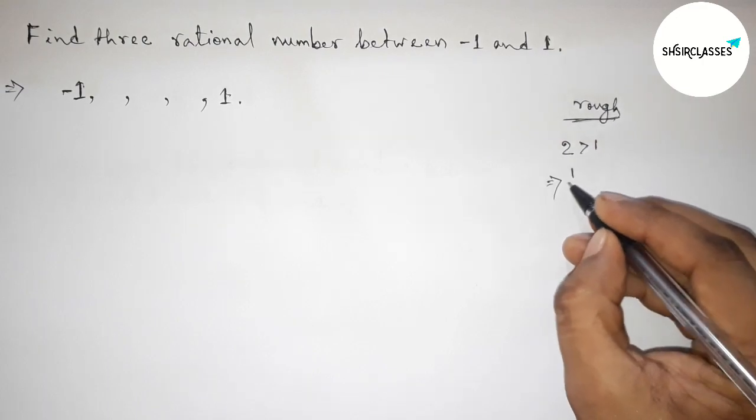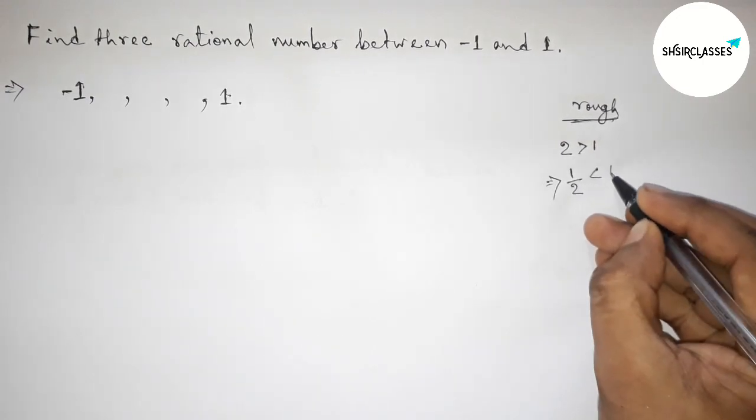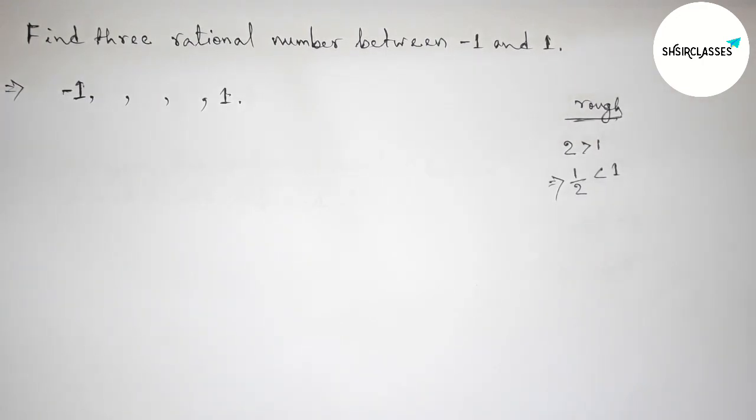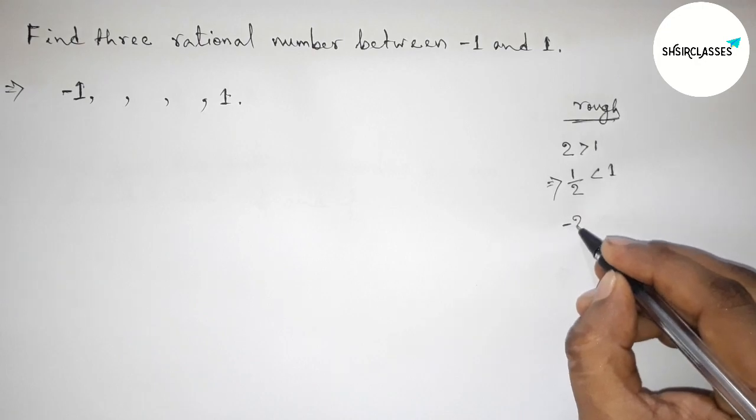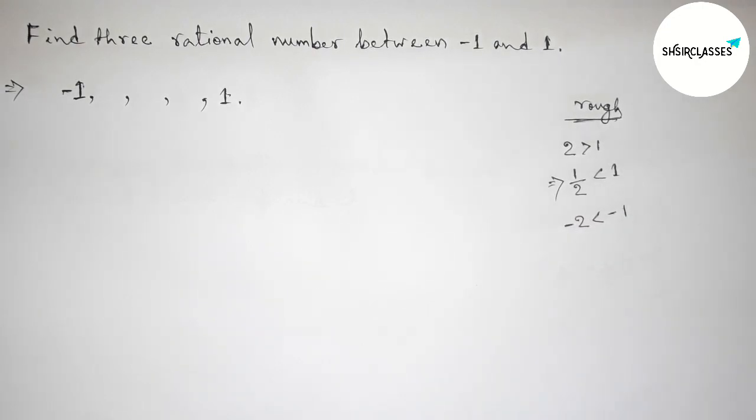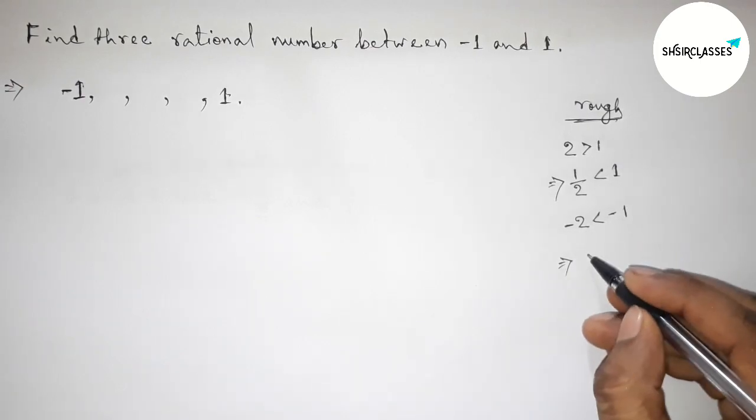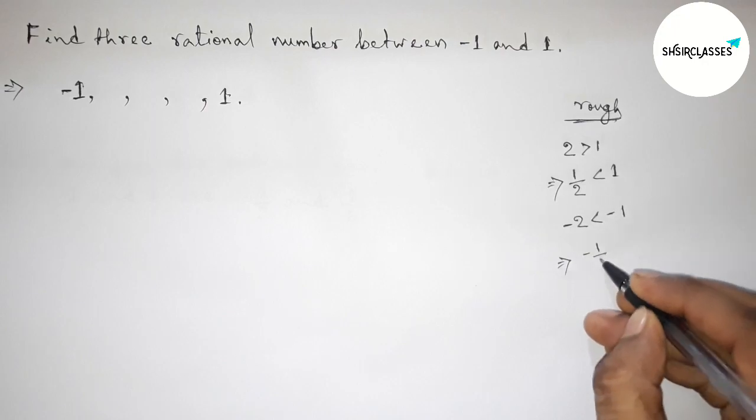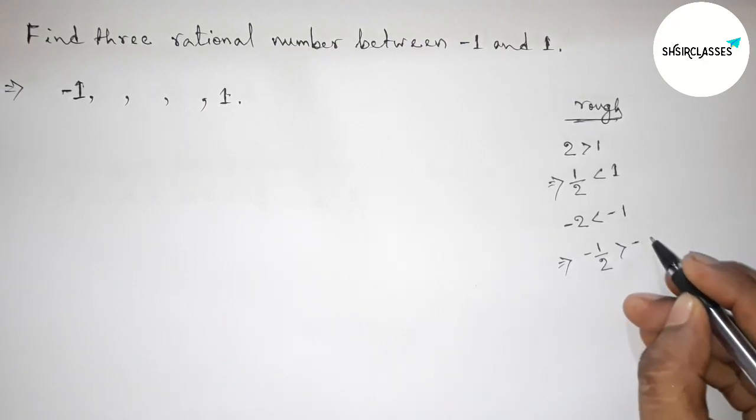Similarly, taking here minus two that is less than minus one. Now taking the inverse of both numbers. The inverse of minus two is minus one by two, and the inverse of minus one is minus one. So minus one by two is greater than minus one.